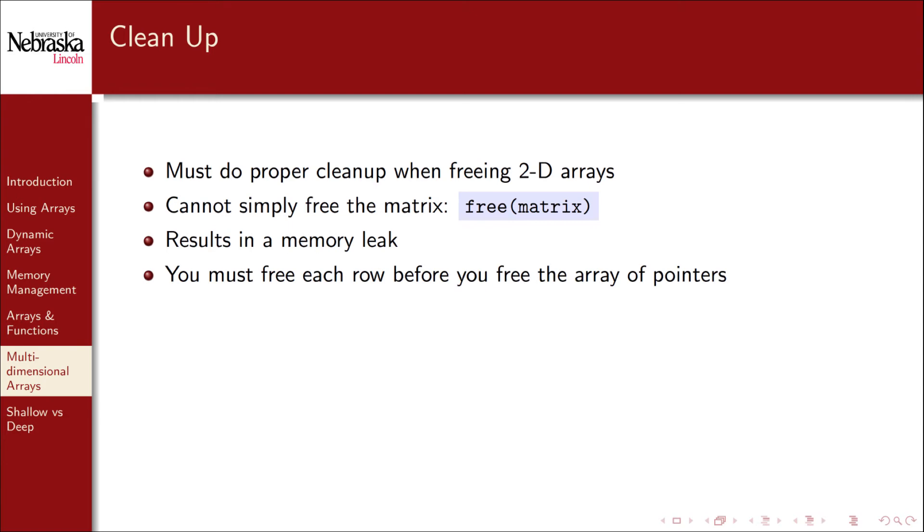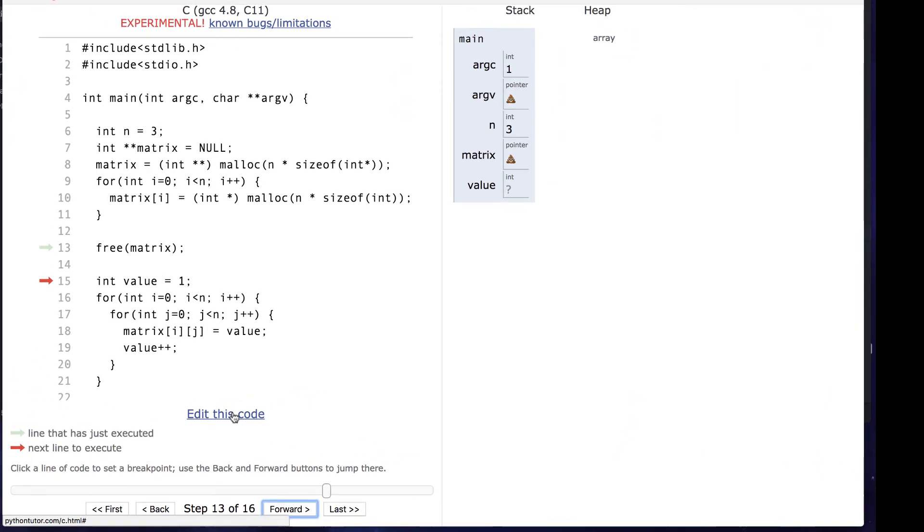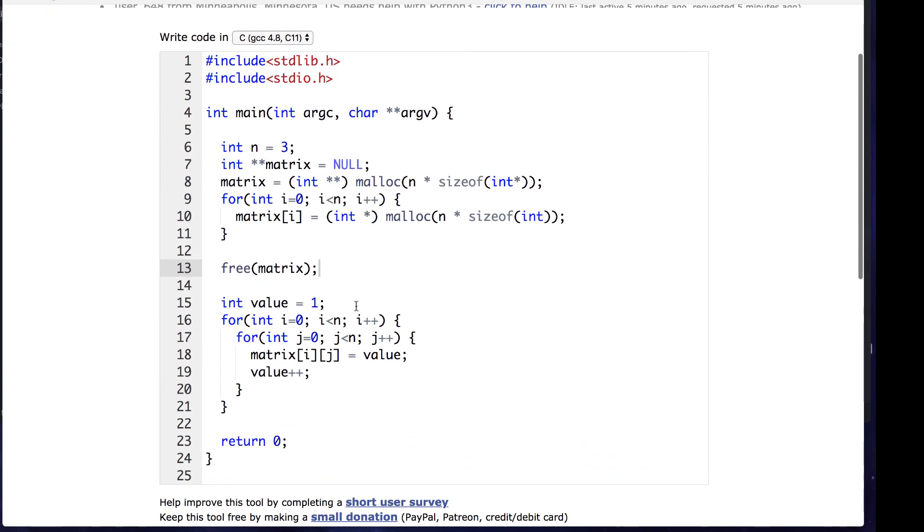The proper way of doing this is to free up each row before you free up the array of pointers. This is essentially working in reverse of how they were created.